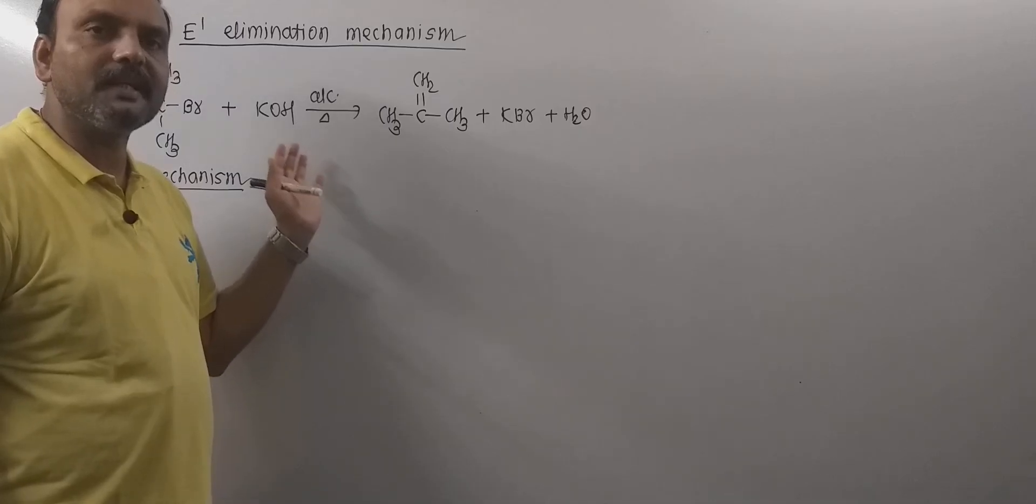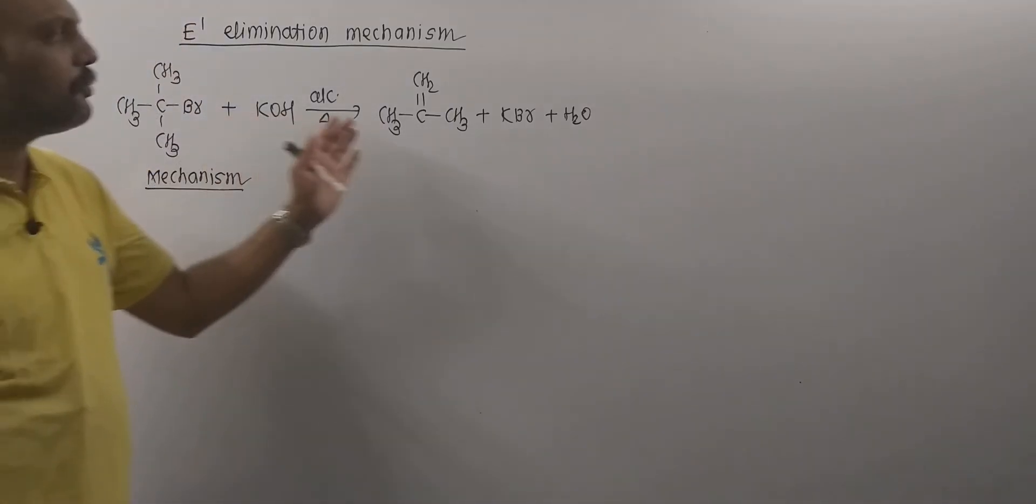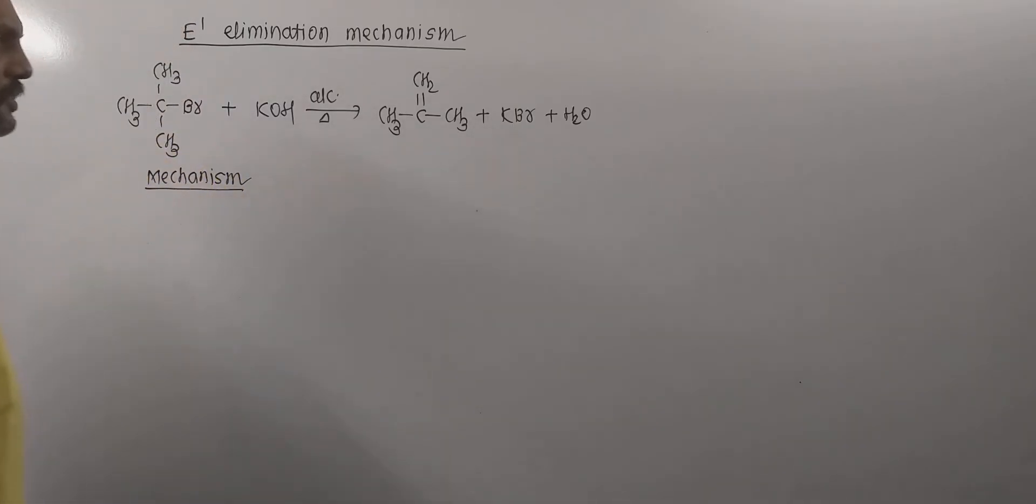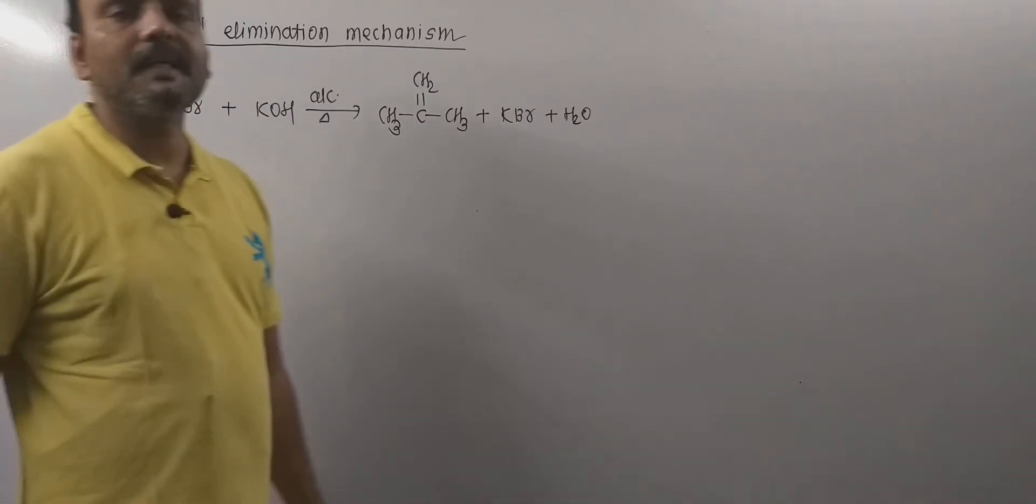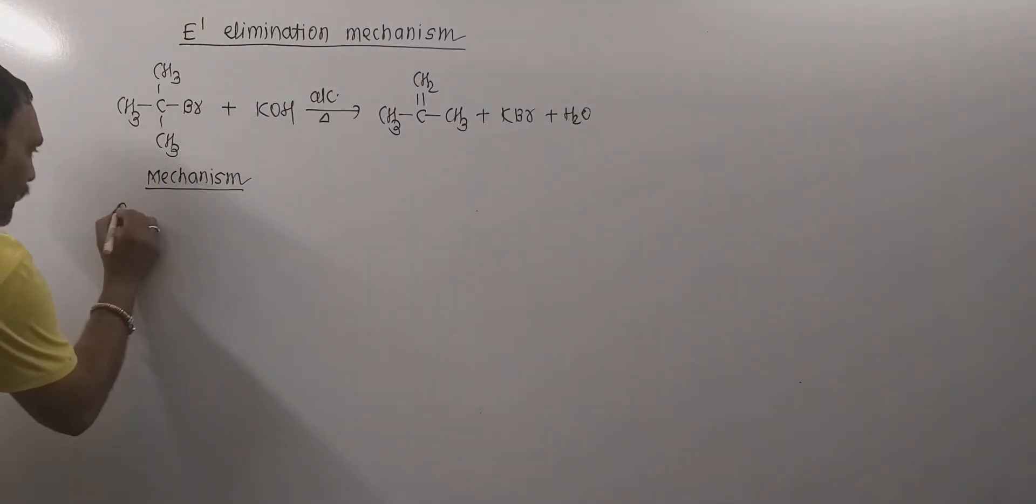Tert-butyl bromide is a tertiary alkyl halide. When it is boiled with alcoholic KOH, then dehydrohalogenation takes place to form isobutylene. Now, as far as the mechanism of this reaction is concerned, it is found to be two-stepped.